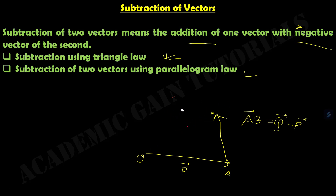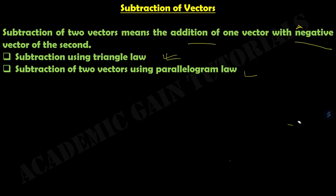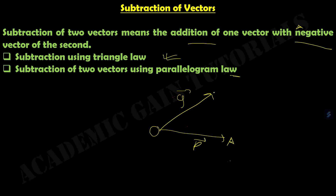Coming to the second method, subtraction using parallelogram law. We draw vector P and vector Q, both acting on a point O. We mention this as A and this as B. Then we extend OB to C, where C is in the opposite direction of Q, and OB equals OC. Then we can represent OC as minus Q.